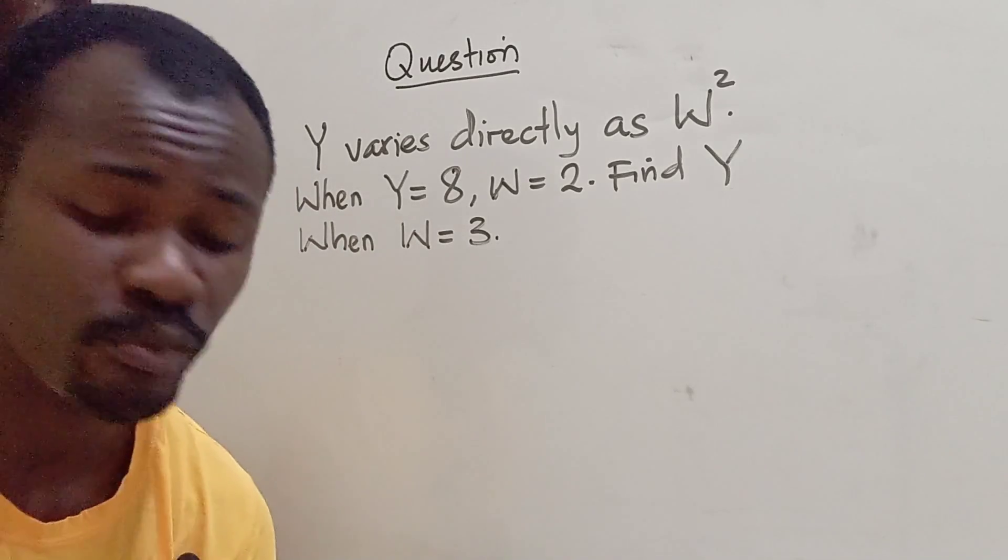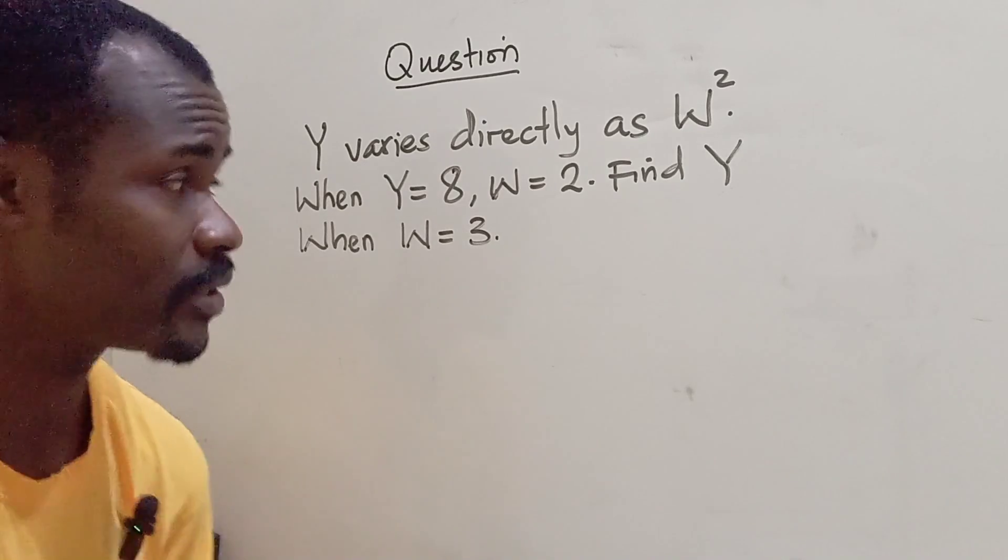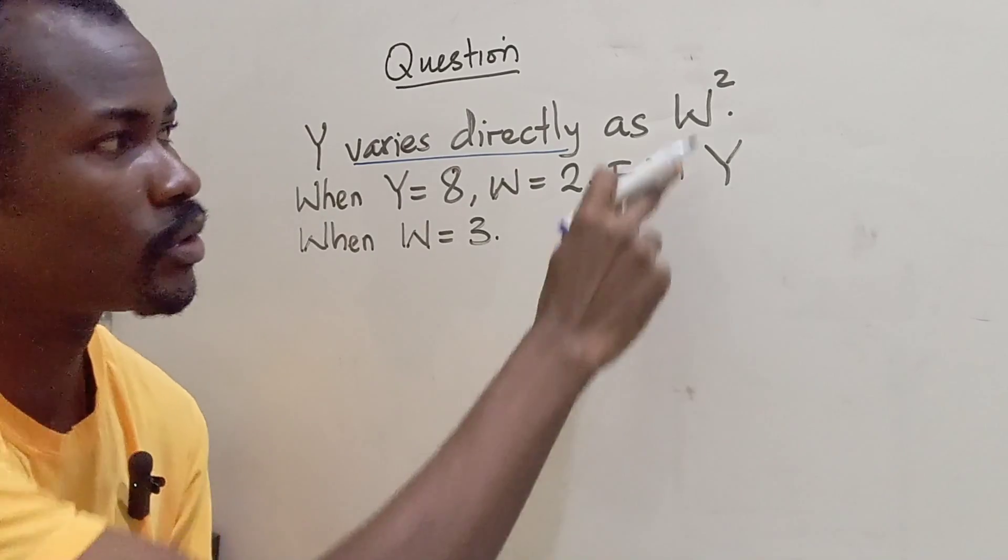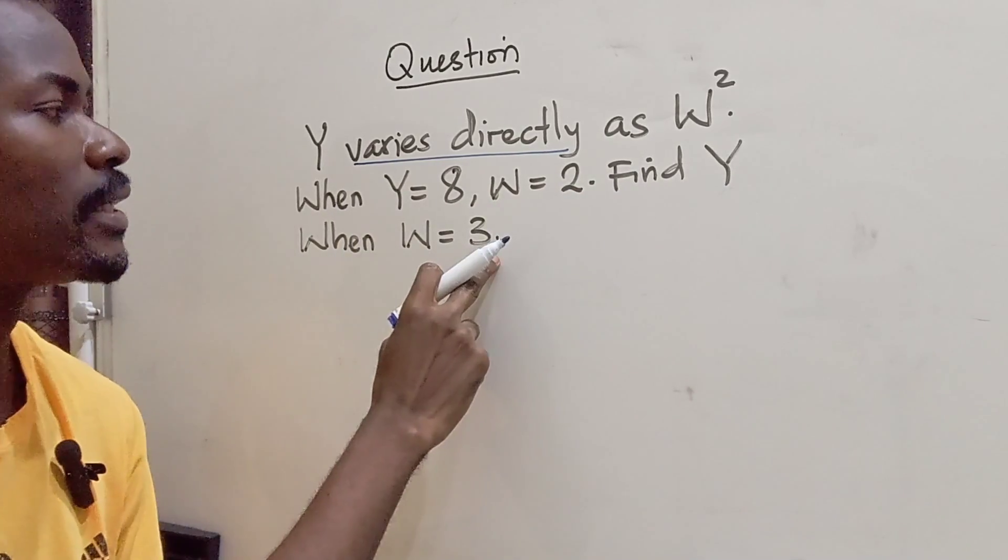Today we are going to be looking at a simple problem on variation. It is actually direct variation. The question says Y varies directly as W squared. So we are going to find Y when W is 3.